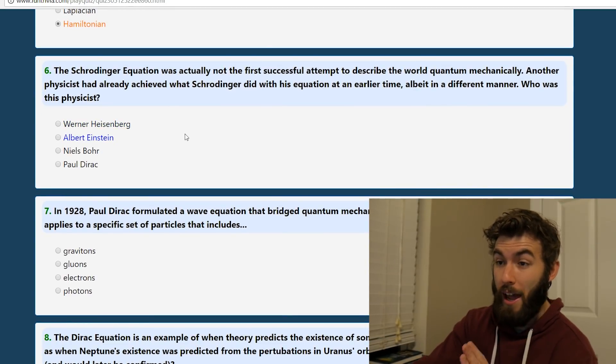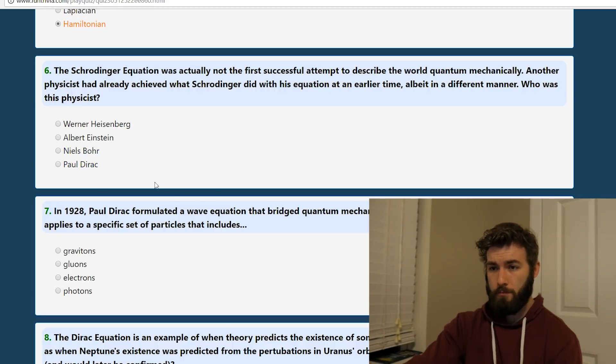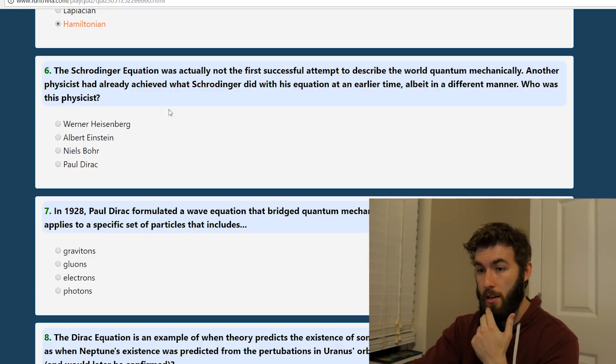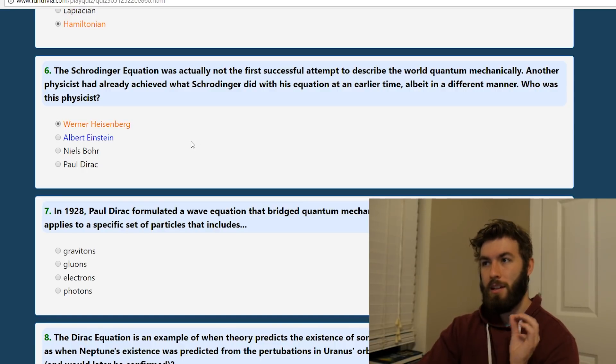The Schrodinger equation was actually not the first successful attempt to describe the quantum world, the world quantum mechanically. Another physicist had already achieved what Schrodinger did with his equation at an earlier time, albeit in a different manner. Who was that physicist? Let's see. Well, Paul Dirac had his little notation, and then he came later with the Dirac equation, which was essentially like a relativistic explanation or extension of the Schrodinger equation. So that, I'm not going to say that. Niels Bohr was pretty classical. Einstein, definitely not. Heisenberg also has the Heisenberg representation, duh, it's Heisenberg, where you have like those time-dependent operators.